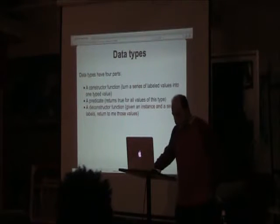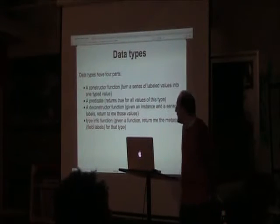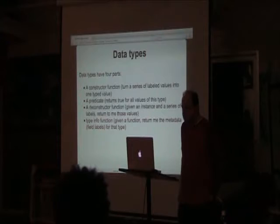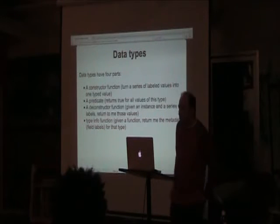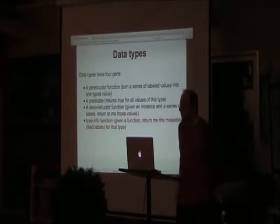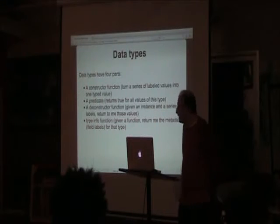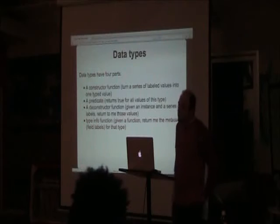The fourth part is type-info, which is not so important but useful. It's a way of getting metadata about a type — for example, what labels or fields it has. In Scheme you can also find out if it was sealed or opaque. It allows you to introspect into these types.